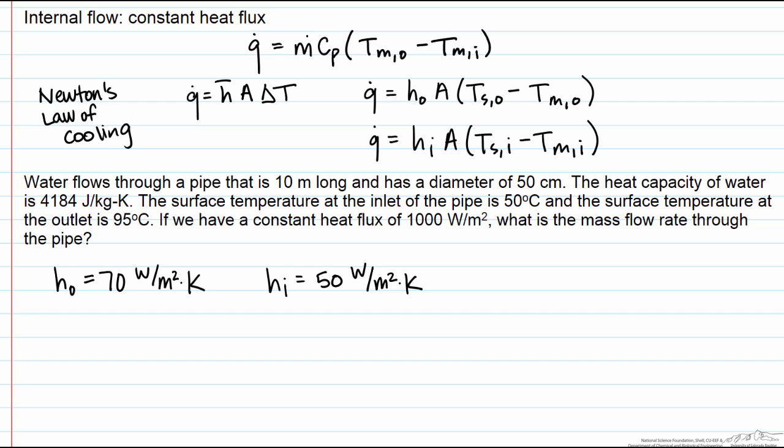Our equation that we are going to use to find the mass flow rate has both the outlet and the inlet mean temperatures, neither of which we have. However, we can use Newton's law of cooling to calculate both the mean outlet temperature and the mean inlet temperature.